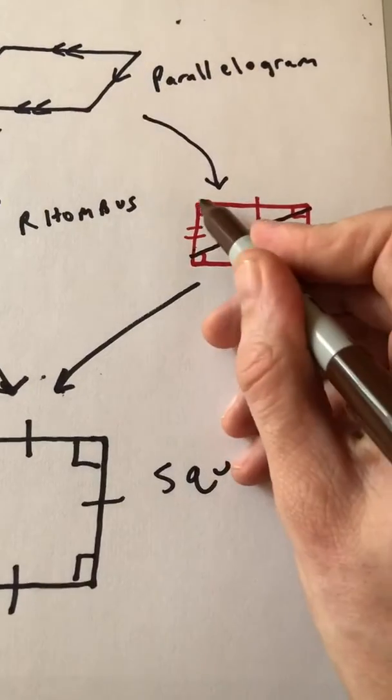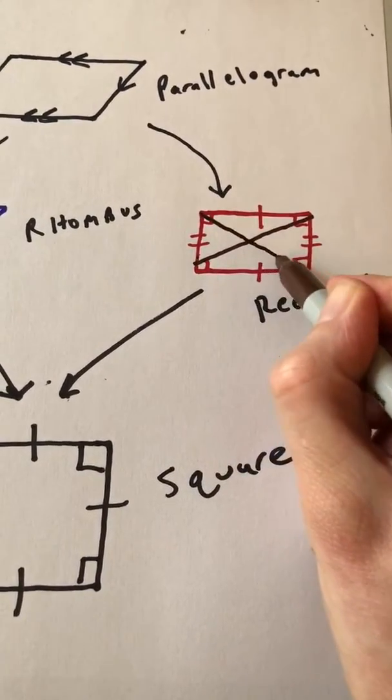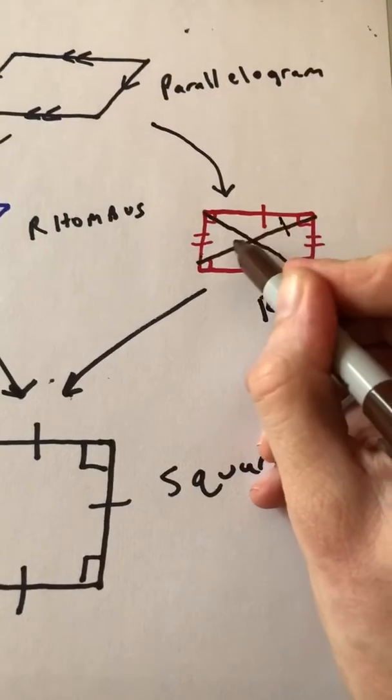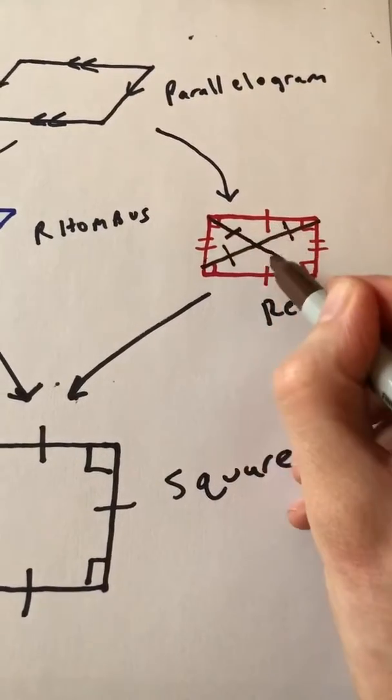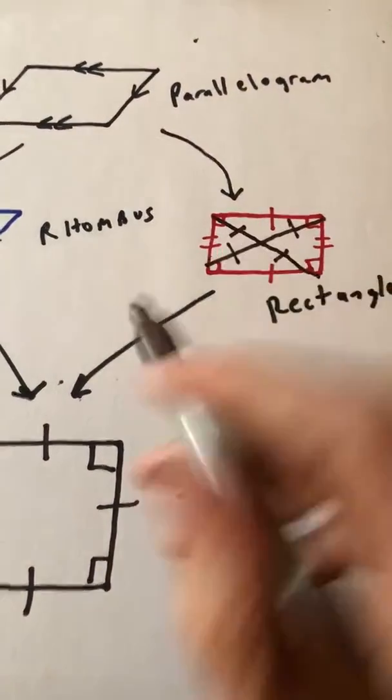If I draw that in there, that means that this and that and that and that are all equal. So those four segments are equal.